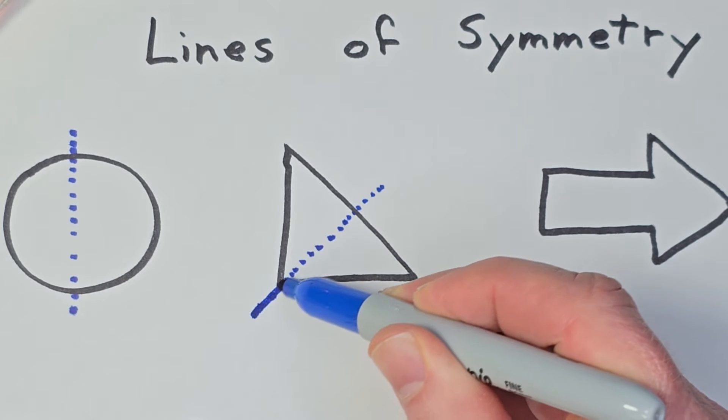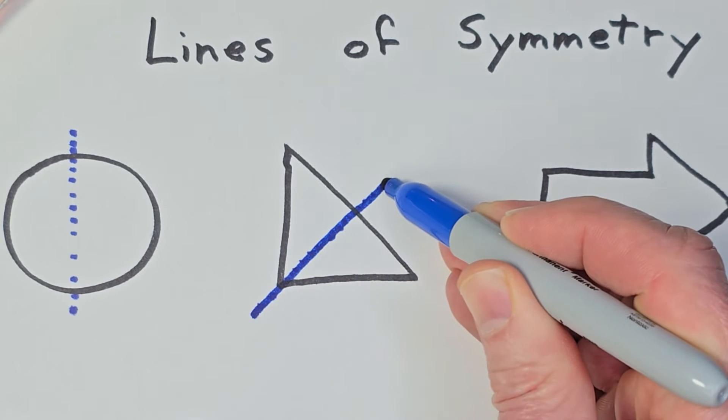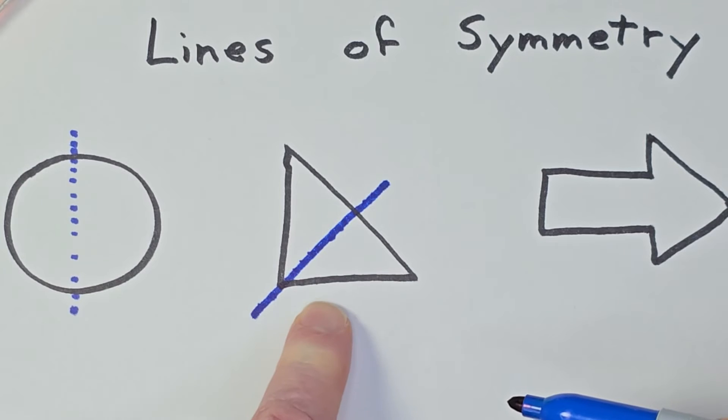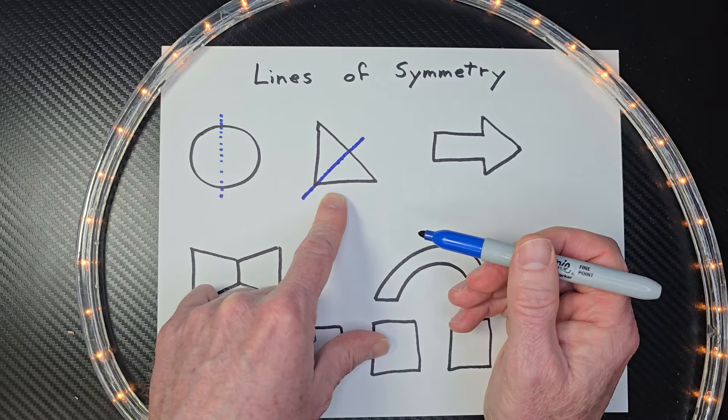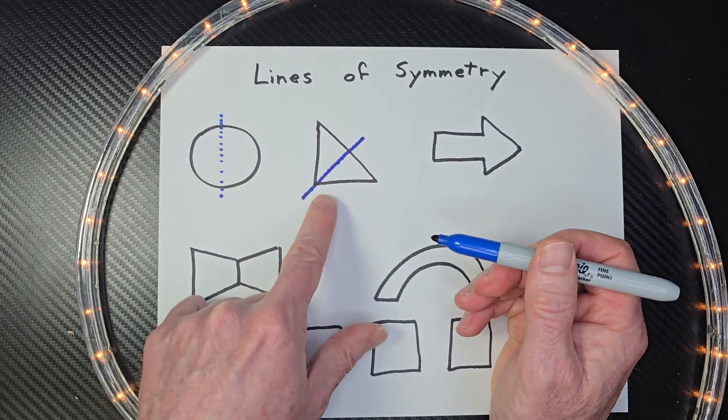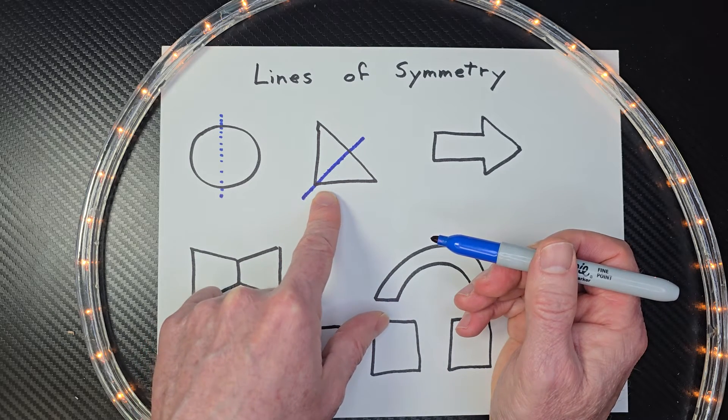Now, sometimes your teacher might just have you draw a straight line or a dotted line. You can always ask your teacher which type of line you might need to draw. So I think for the rest of these examples, I'm going to draw a solid straight line.